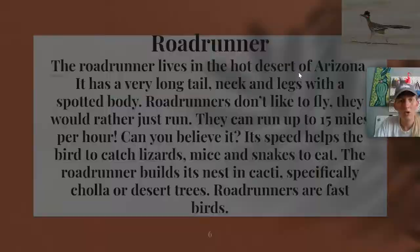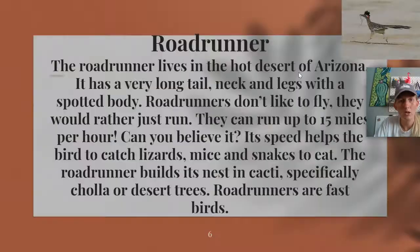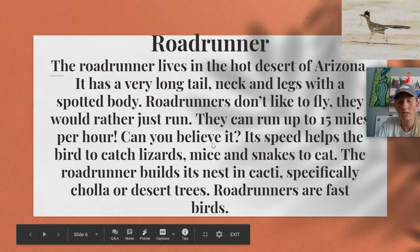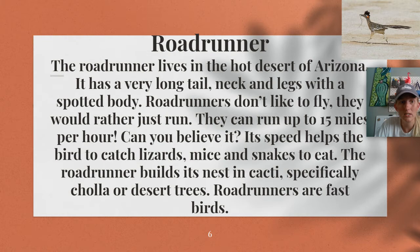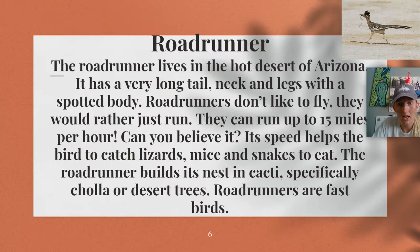The next one we're going to take a look at is the roadrunner. The roadrunner lives in the hot desert of Arizona or other hot dry climate areas. It has a very long tail, neck, and legs with a spotted body. Roadrunners do not like to fly — they would rather just run. They can run up to 15 miles per hour. Their speed helps the bird to catch lizards, mice, and snakes. The roadrunner builds its nest in cacti, specifically Cholla or desert trees.